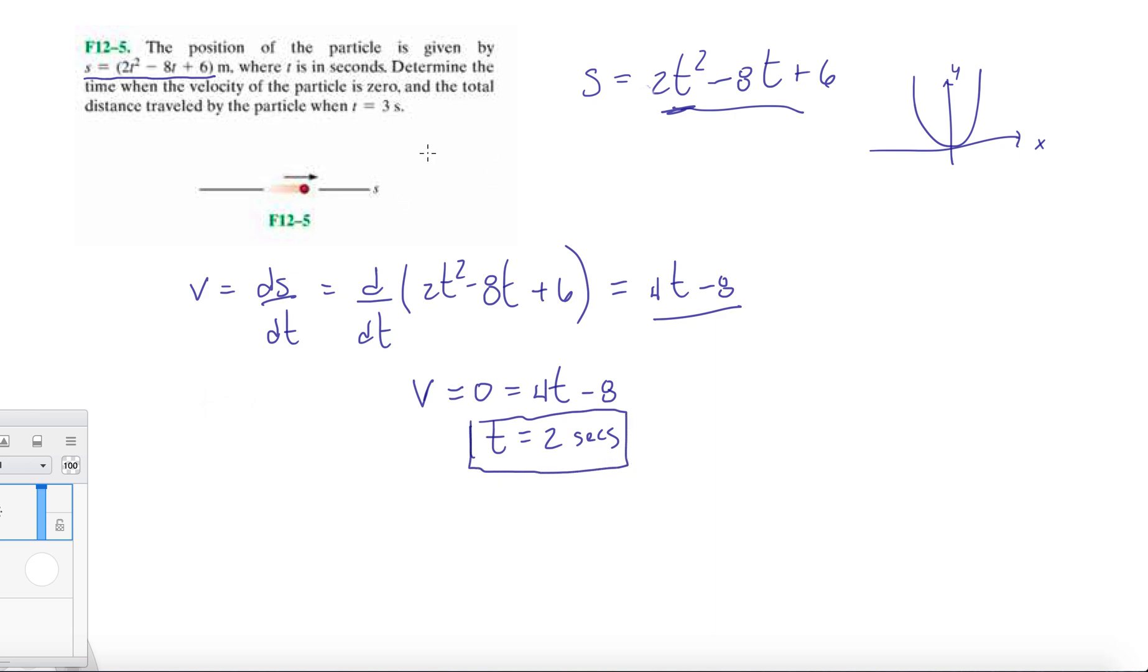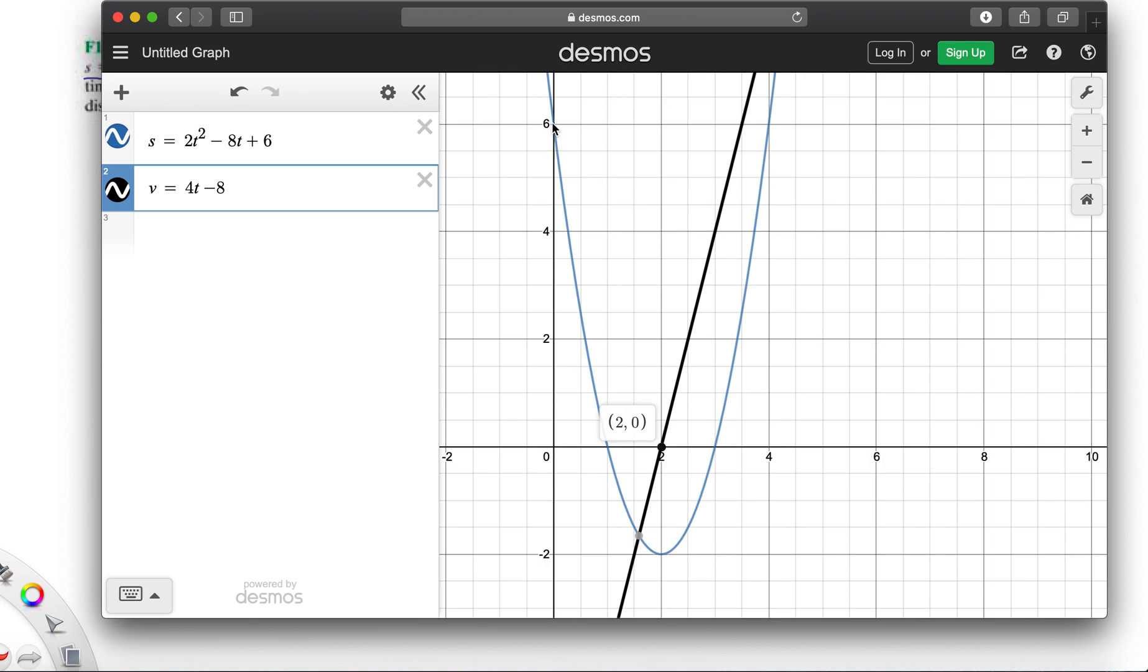That's part of the problem - we want to solve for the time where the velocity is 0, and then the total distance traveled by the particle when t equals 3 seconds. We know the particle from time equals 0 to time equals 2 went 6 meters and an extra 2 meters. We're looking at absolute distances, so it traveled 8 meters until t equals 2. And then from t equals 2 to t equals 3, it went another 2 meters.